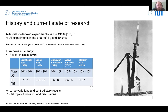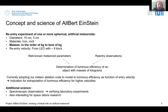Therefore, luminous efficiency is still a topic of research and discussion. We would like to participate in this research by doing a re-entry experiment of one or more spherical artificial meteoroids. You might ask: what's the difference between our experiment and the ones from the 1960s?